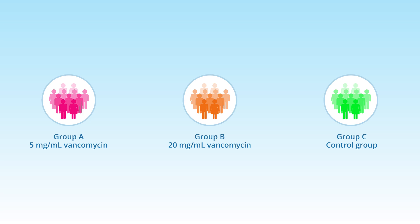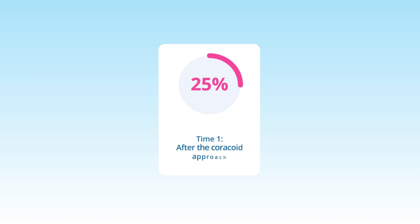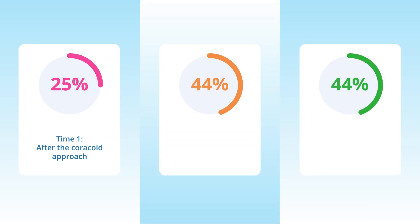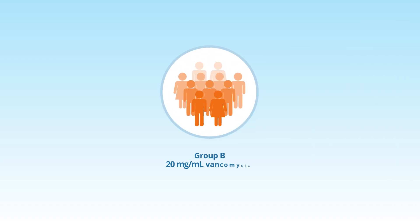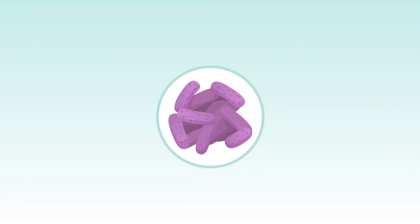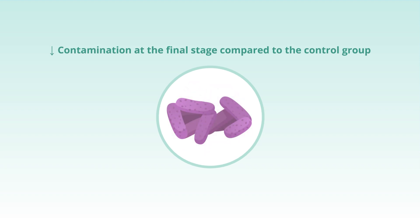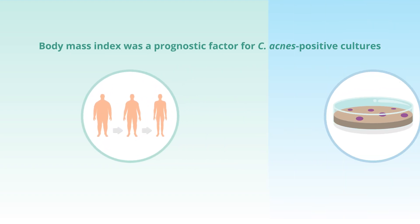Swab samples were collected at three surgical stages to assess C. acnes contamination. Results indicated contamination rates of 25% at the first stage and 44% at the second and third stages. Group B, which received the highest concentration of vancomycin, showed a statistically significant reduction in contamination at the final stage compared to the control group, with a p-value of 0.027.